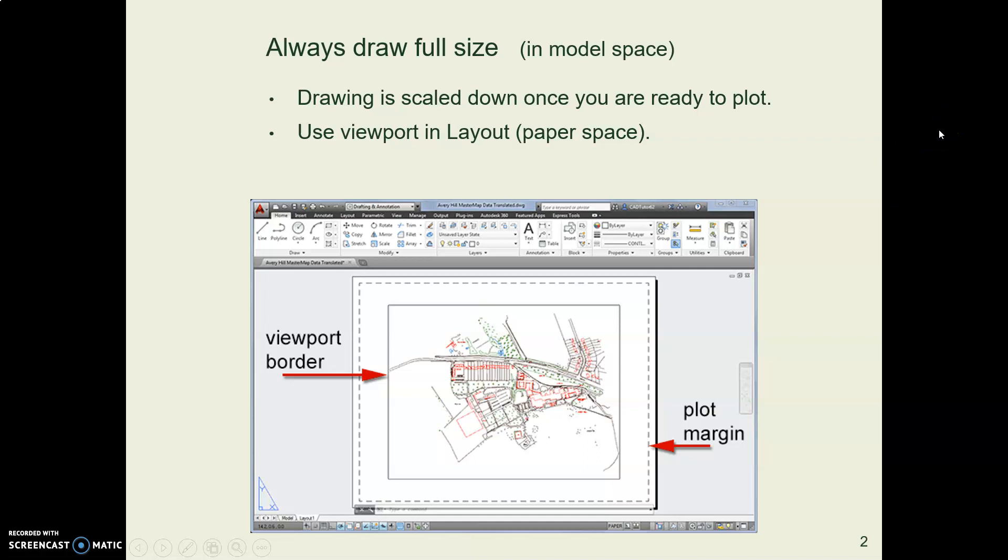The thing to remember about scale is that we always draw full size and we draw in model space. So if your building were 200 feet wide, in model space you draw a thing 200 feet wide. It's full size.